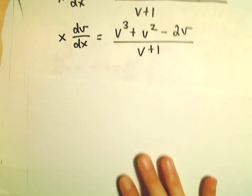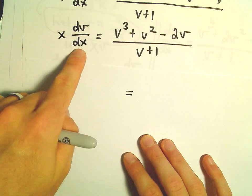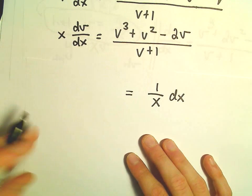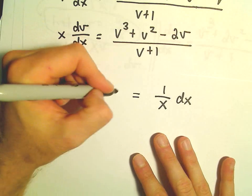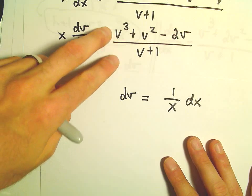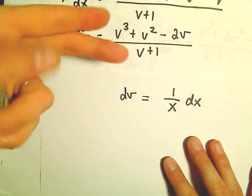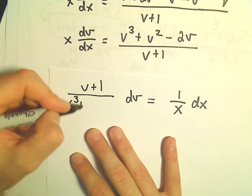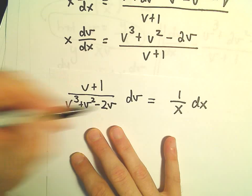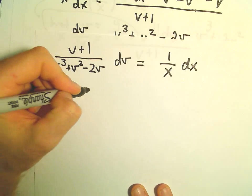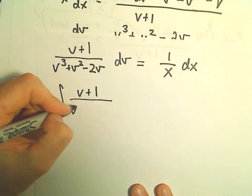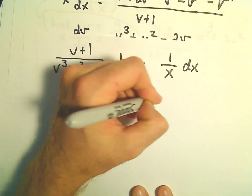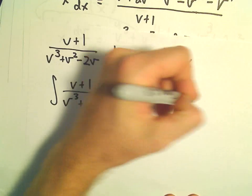Now we'll multiply dx to the right side and divide by x, giving us 1/x dx. We divide by the v expression or multiply by its reciprocal, so we'll have (v + 1)/(v³ + v² - 2v) dv = (1/x) dx. Now we integrate both sides: the integral of (v + 1)/(v³ + v² - 2v) dv equals the integral of 1/x dx.